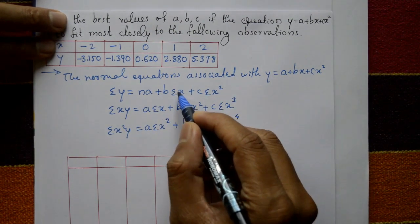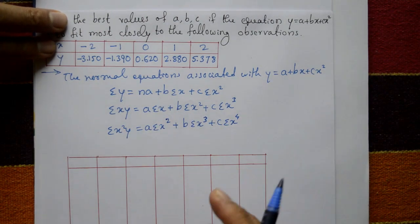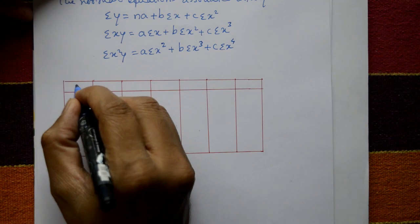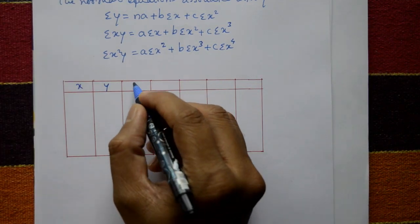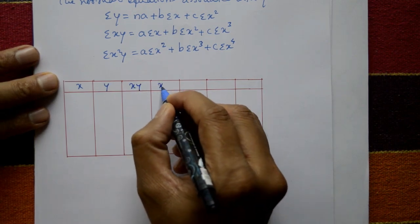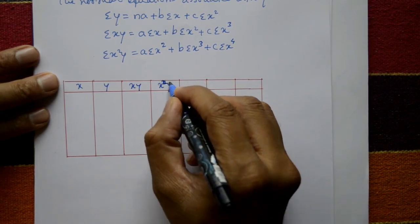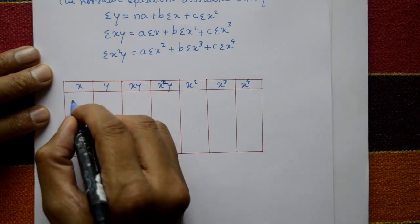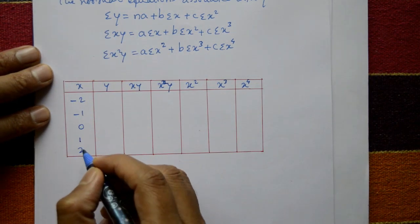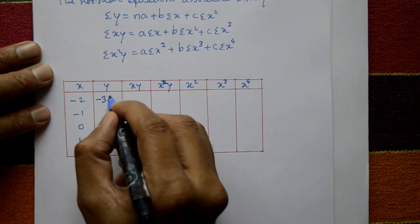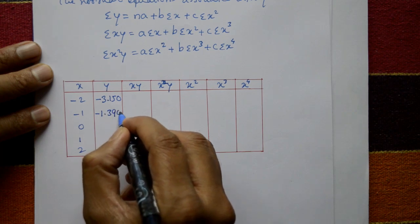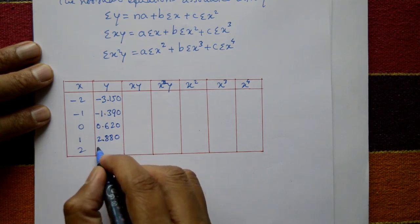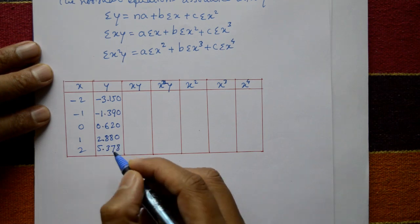Now construct a table. The required columns are x, y, xy, x²y, x², x³, and x⁴. The x values are -2, -1, 0, 1, 2 and the y values are -3.150, -1.390, 0.620, 2.880, and 5.378.